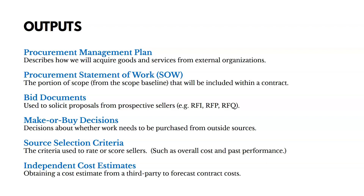Make-or-Buy Decisions document what we're going to make or do on our own versus buy from outside sources. Then there's Source Selection Criteria — a scorecard for how we're going to grade or score potential sellers. Hopefully we have several options and use Source Selection Criteria as a means of scoring them. We could also have Independent Cost Estimates as an output — obtaining a cost estimate from a third party to forecast contract costs. It's like getting a second opinion from a doctor to confirm a diagnosis; it's just good practice.